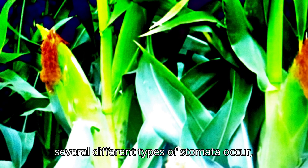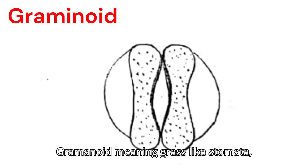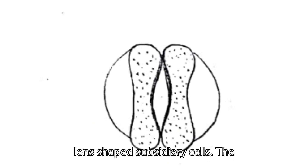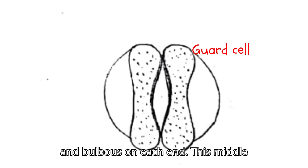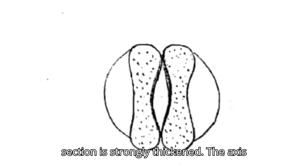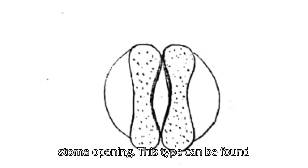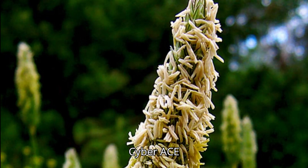In monocots, several different types of stomata occur such as Gramineous or Graminoid, meaning grass-like, stomata, which have two guard cells surrounded by two lens-shaped subsidiary cells. The guard cells are narrower in the middle and bulbous on each end, and this middle section is strongly thickened. The axis of the subsidiary cells is parallel to the stoma opening. This type can be found in monocot families including Poaceae and Cyperaceae.